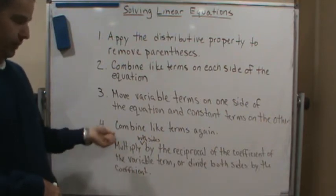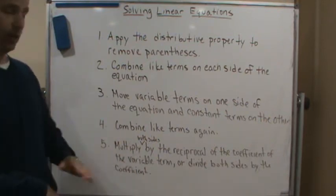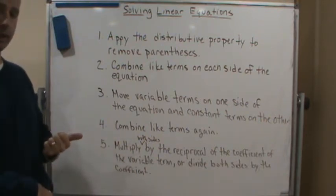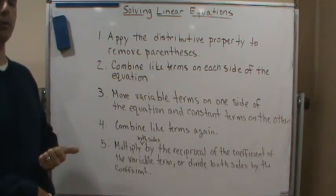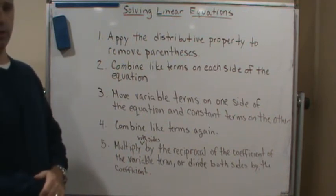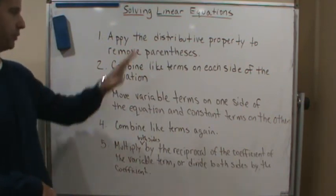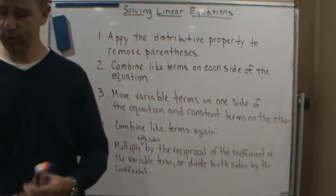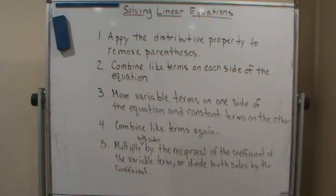We combine like terms again and then finally we're going to either multiply both sides by the reciprocal of the coefficient of the variable term or divide both sides by the coefficient of the variable term. Either one is fine. These are the steps, now let's do some examples and see it in action.